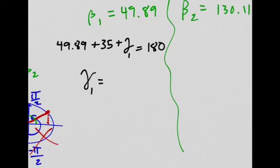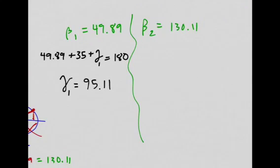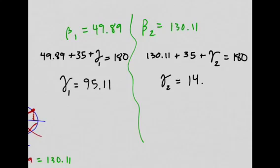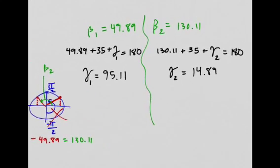They'll have to add up to 180. So gamma 1 would be about 95.11. And if I do the same thing for beta 2, I'll get a different gamma 2. And gamma 2 would end up being 14.89. You could just solve that linear equation. So with these two gamma values, those two beta values, I'm going to find out my two c values.